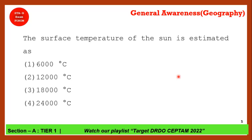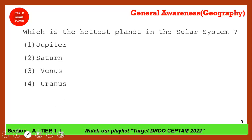The surface temperature of the Sun is estimated as — the correct answer is option 1: six thousand degrees centigrade. If any competitive examination has negative marking, you should be careful with questions you don't know. However, the DRDO CEPTAM exam has no negative marking, so you have a 25% probability of guessing correctly on any question.